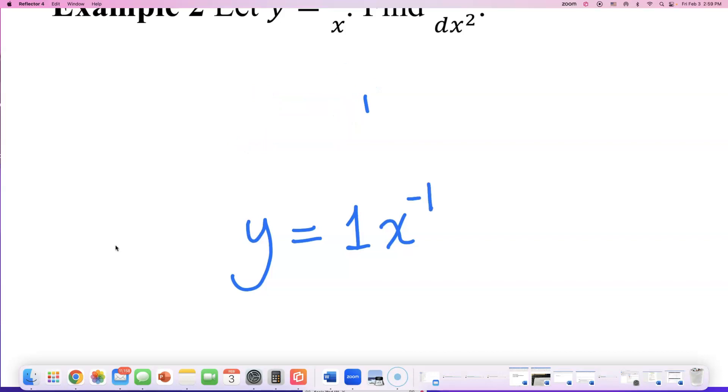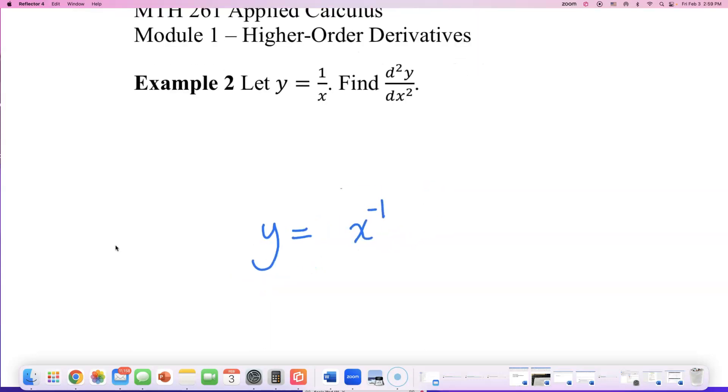So you can bring it up. You don't really have to put the 1 in front of it. That's okay if you want to just write y equals x to the negative first power. Now let's find whatever this is.